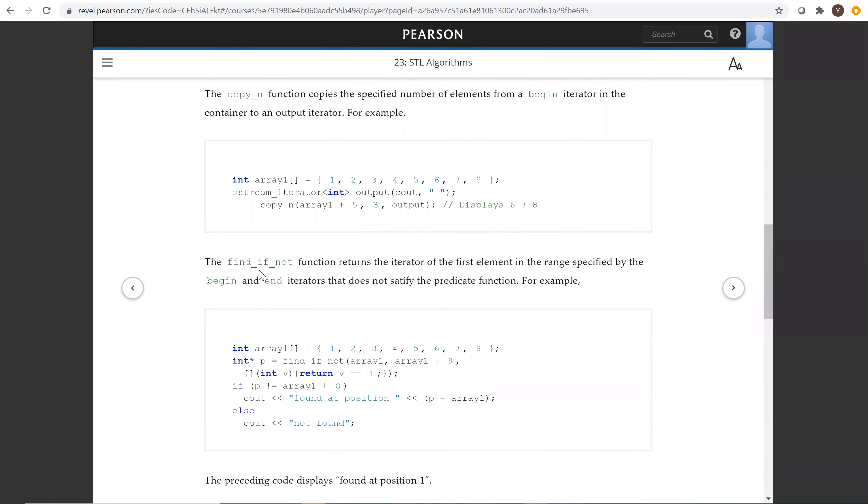FindIfNot function returns the iterator of the first element in the range specified by begin and end that does not satisfy the predicate function. Here in the sequence, this element does not satisfy the condition of being equal to two. The return is this position one.